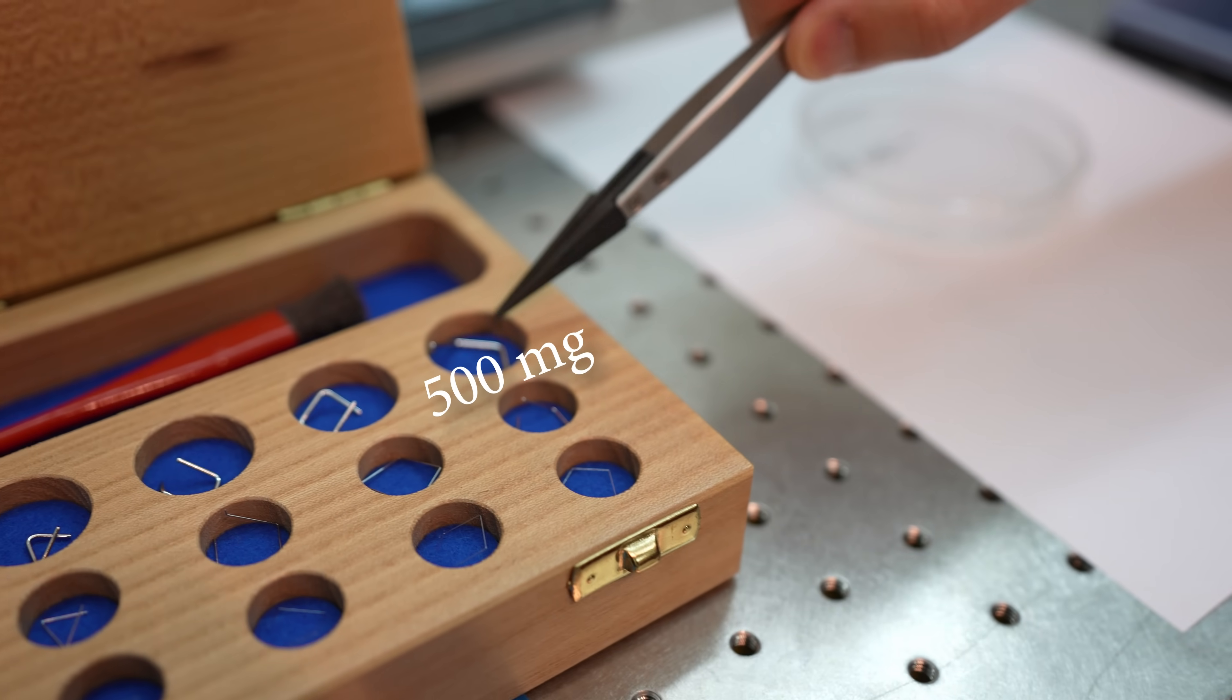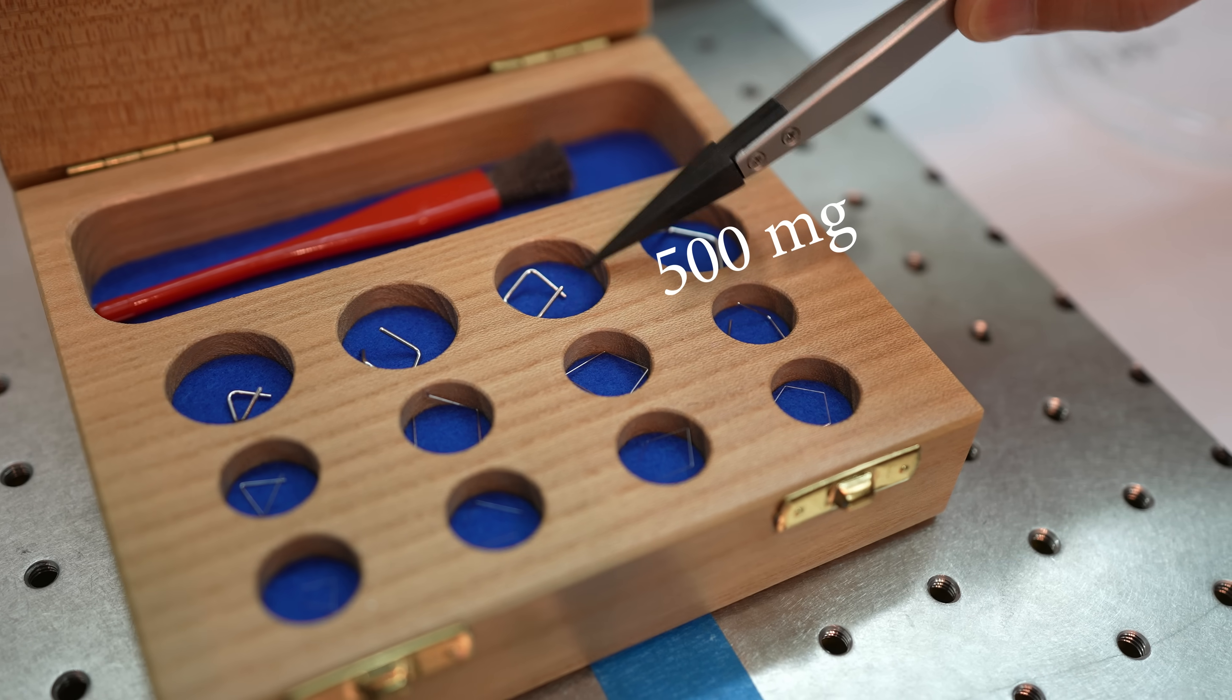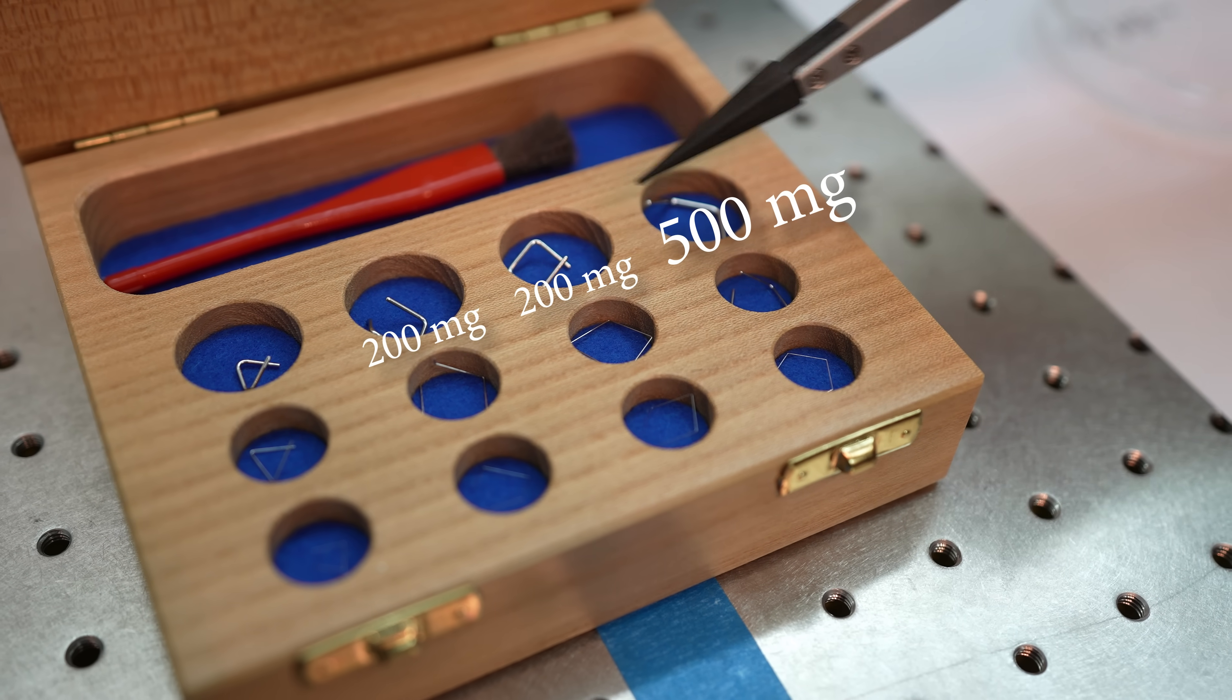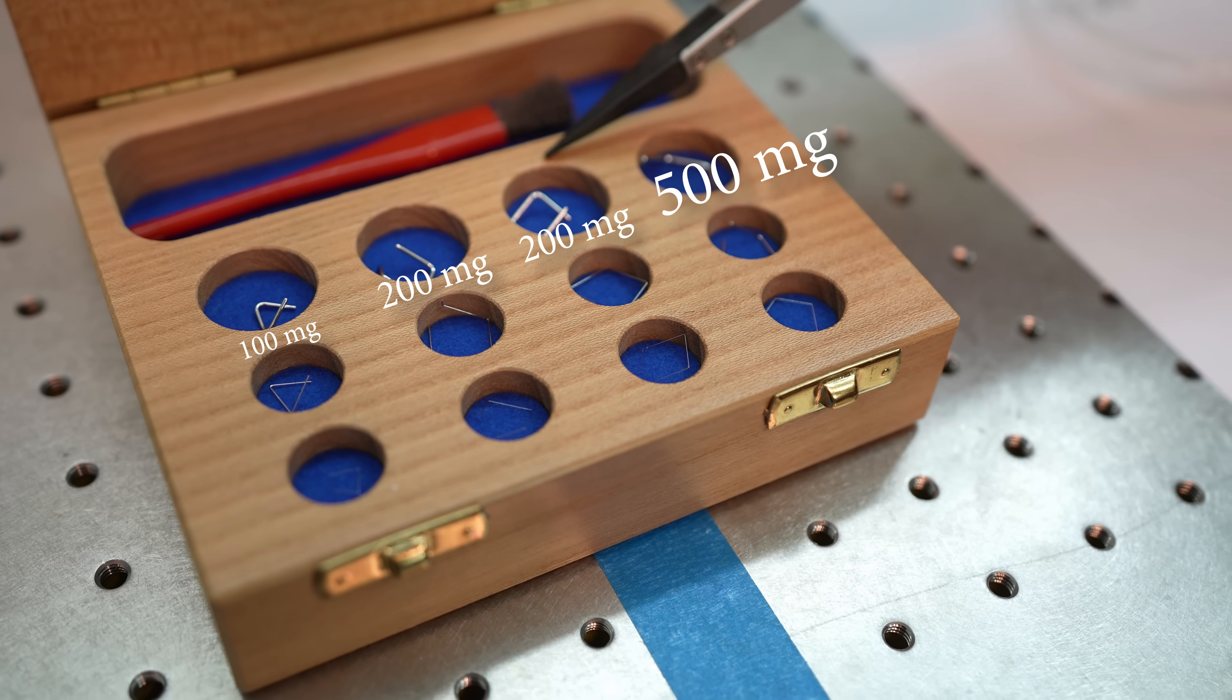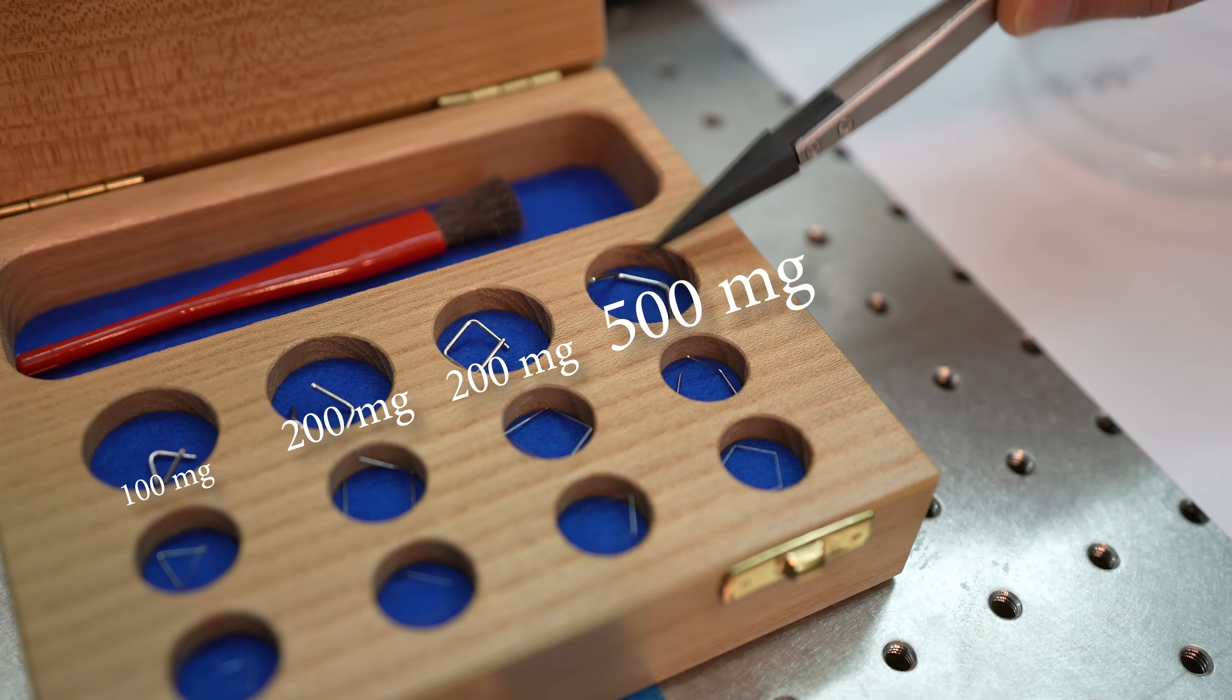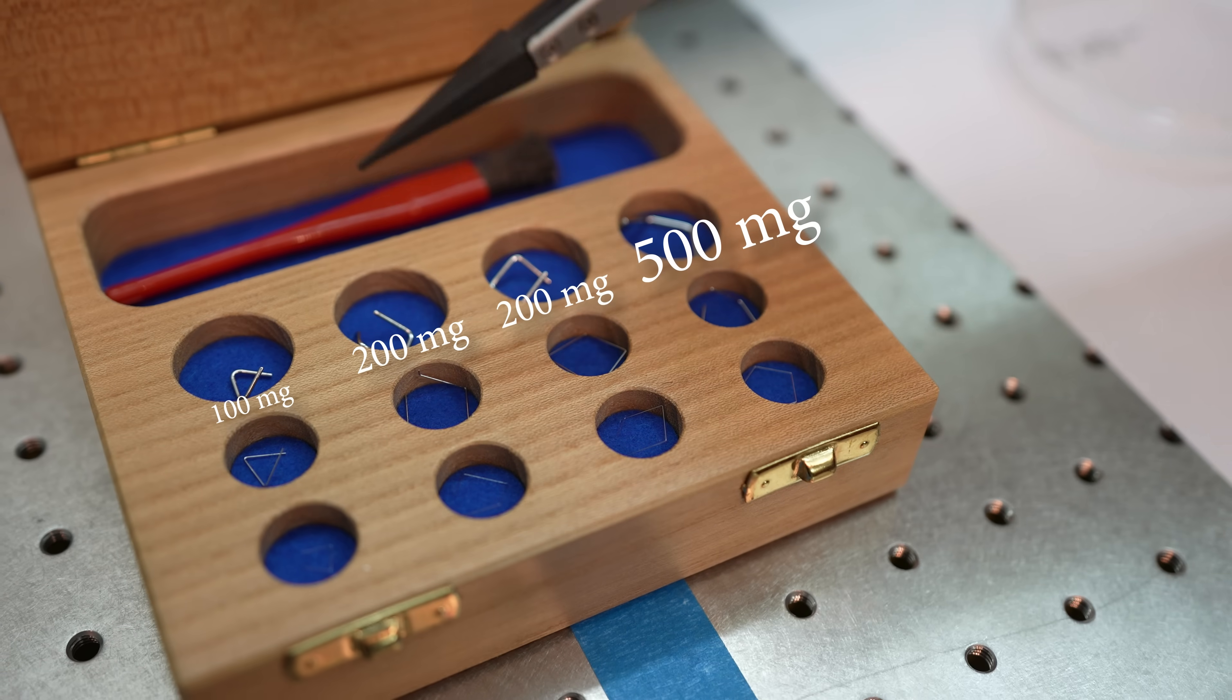So you could do like one common arrangement is something like we have here. This is a 500 milligram mass. These are two 200 milligram masses and that's a 100 milligram mass. So these three sum up to this, right? So you can compare those two against each other.